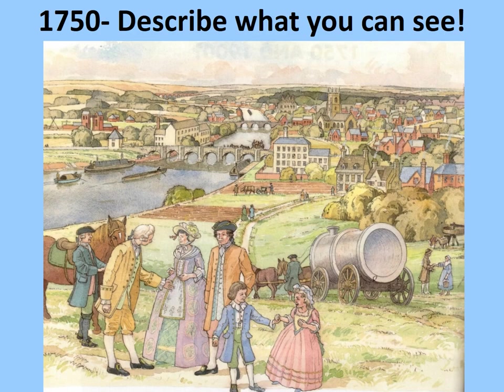Next we're going to look at an artist's impression of a typical British town in around 1750. This is not based upon anywhere in particular, but it shows some of the typical features of towns at this time. This would have been considered a reasonably large town for the period. Take a moment to pause the video, look closely at what you can see, and then afterwards we'll review some of the main features you might have noticed.